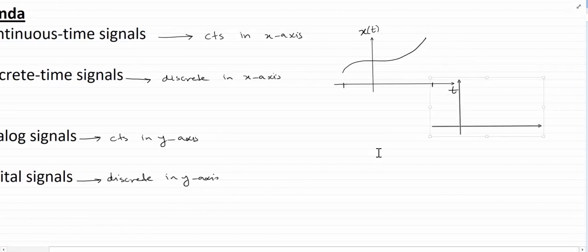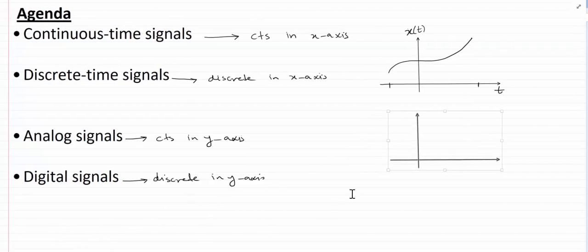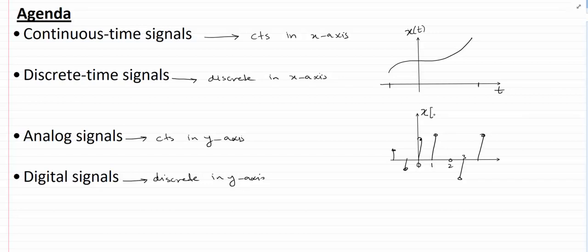If I have a discrete time signal, it is going to be defined on discrete values only. You can see that the signal is not defined for any value of time between 0 and 1, but only at 0 and 1. This kind of signal is called a discrete time signal, and the symbol we use is x with square brackets and small n, so the independent variable for discrete time signals is n.